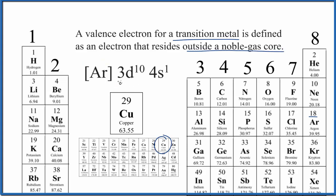So for copper, we could say that there are 10 plus 1. There are 11 valence electrons, and that would satisfy this definition.